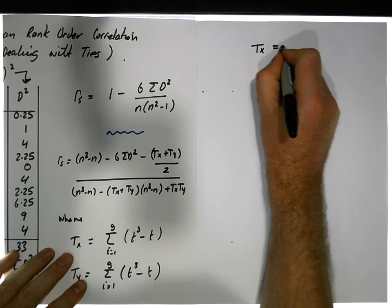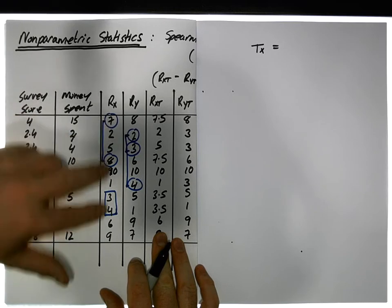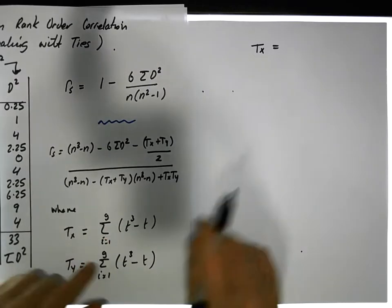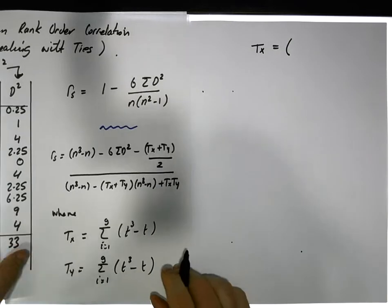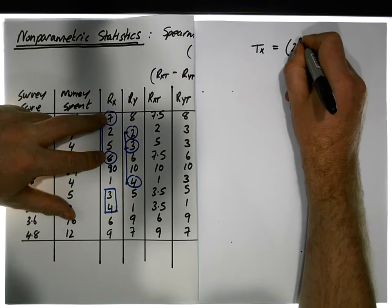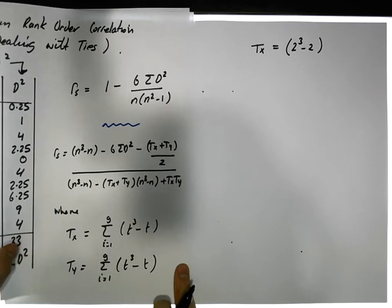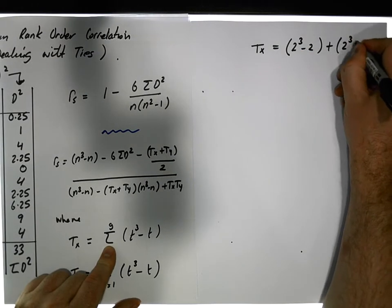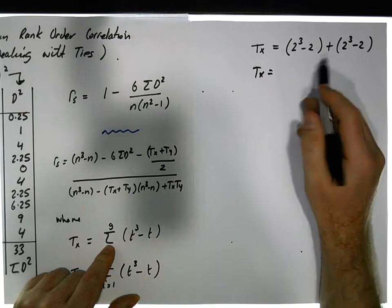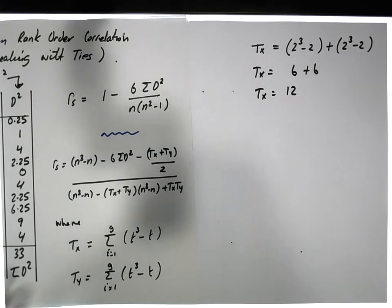Dealing with the ranks: T(x) equals the sum over groups of (t³ − t)/12. How many groups are there? There are two sets of tied groups for X. So g = 2. For the first group there are 2 tied values, so it's 2³ − 2, and for the second group there are also 2 tied values, so it's plus 2³ − 2. That gives us 8 − 2 = 6, plus 6, so T(x) = 12.